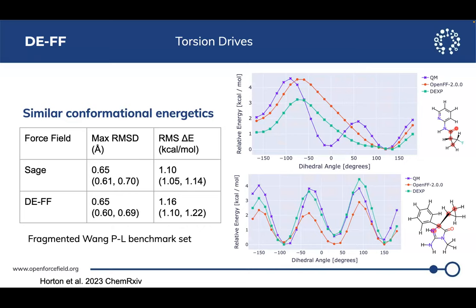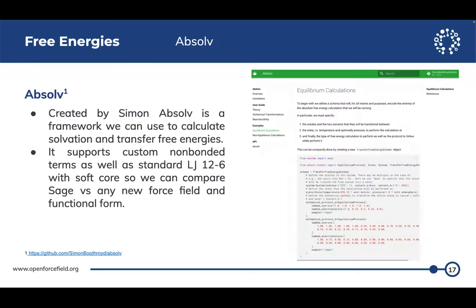We then did a valence fit to complete the force field, following the normal OpenFF pipeline for producing a general transferable force field. We looked at fragments of the protein-ligand benchmark set previously used with BespokeFit — measuring maximum RMSD between QM and MM structures from torsion profiles, and the root-mean-square error in energy profiles. We found very similar performance to SAGE, with some cases a little worse and some improved. The sterically congested molecule case showed some improvement, suggesting the more realistic repulsion term in the double exponential may help there.